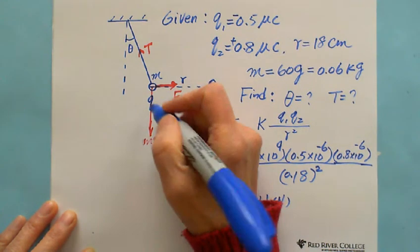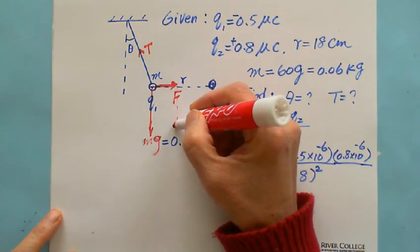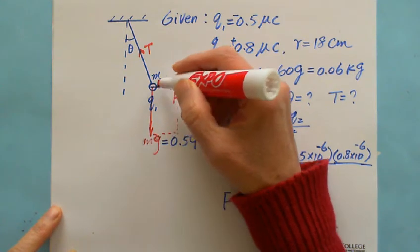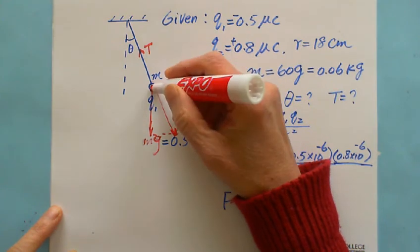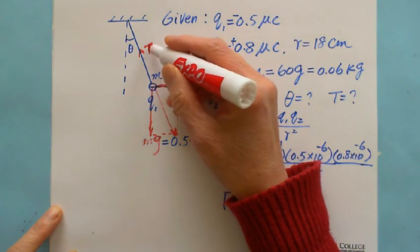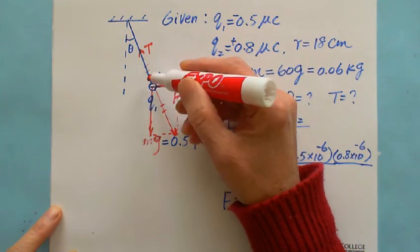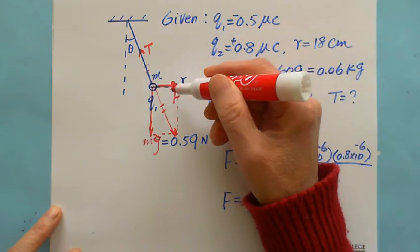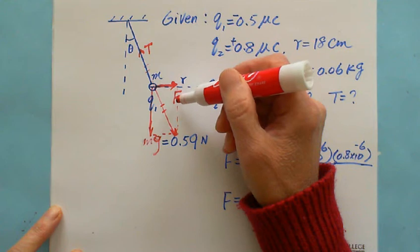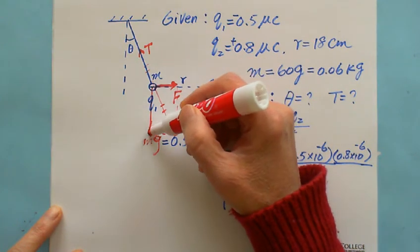Because these three forces are balanced, that means mg and F, the net force of F and mg, will equal the tension force. These two are equal because it's balanced, that means the net force of the three equals zero.